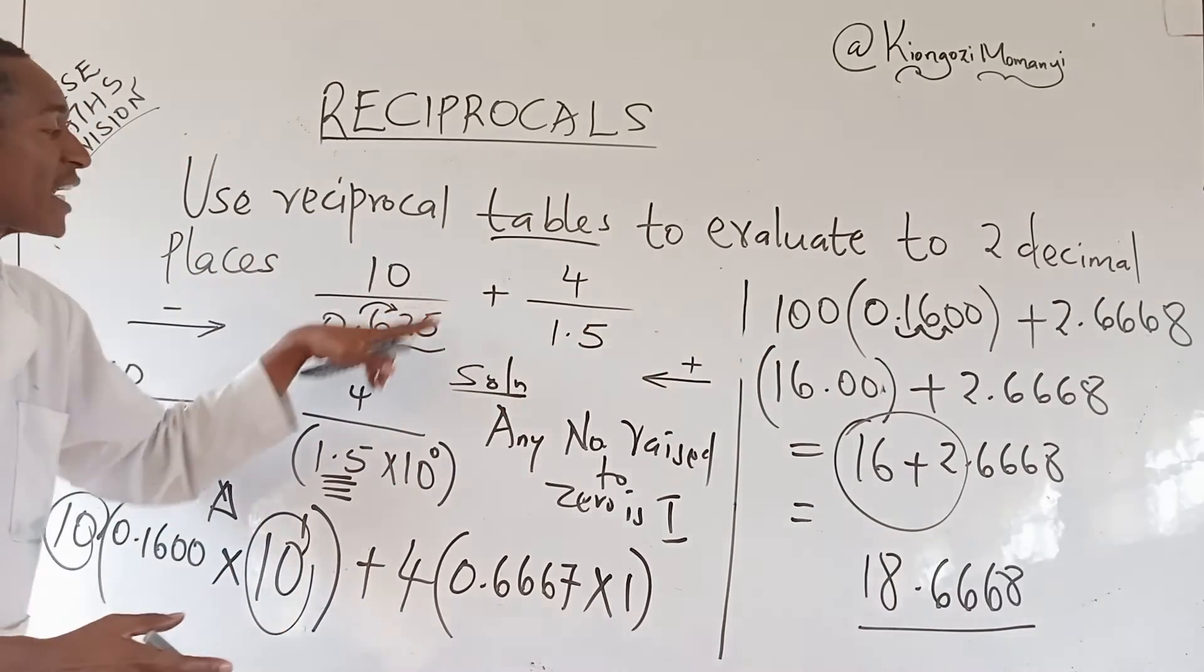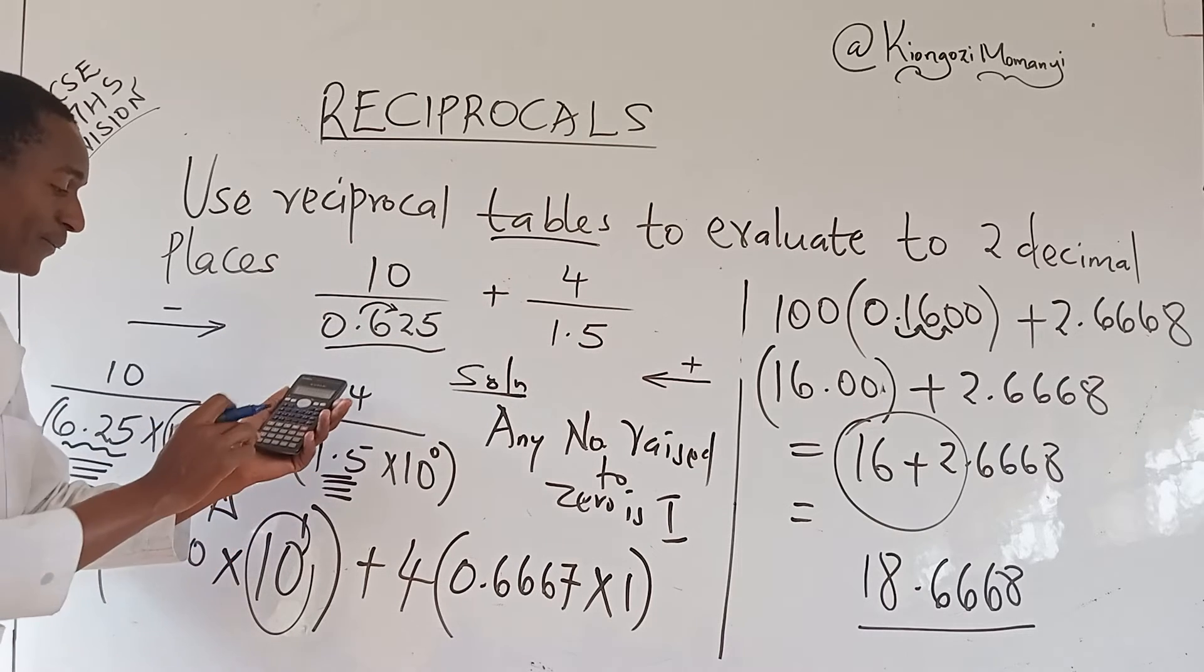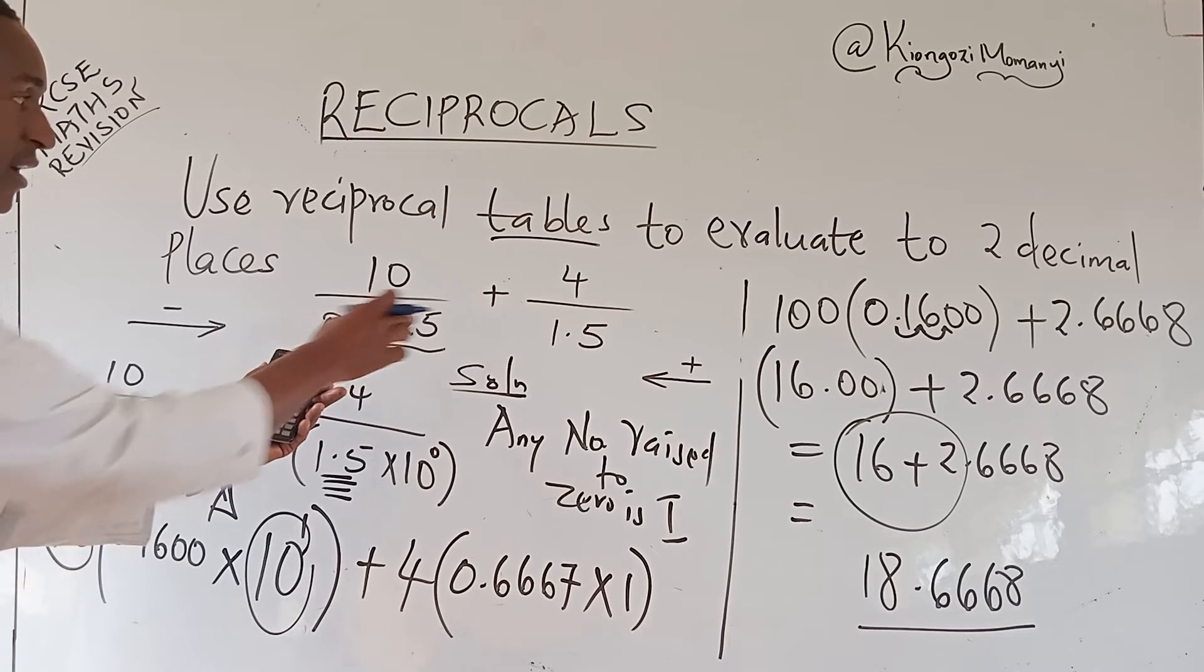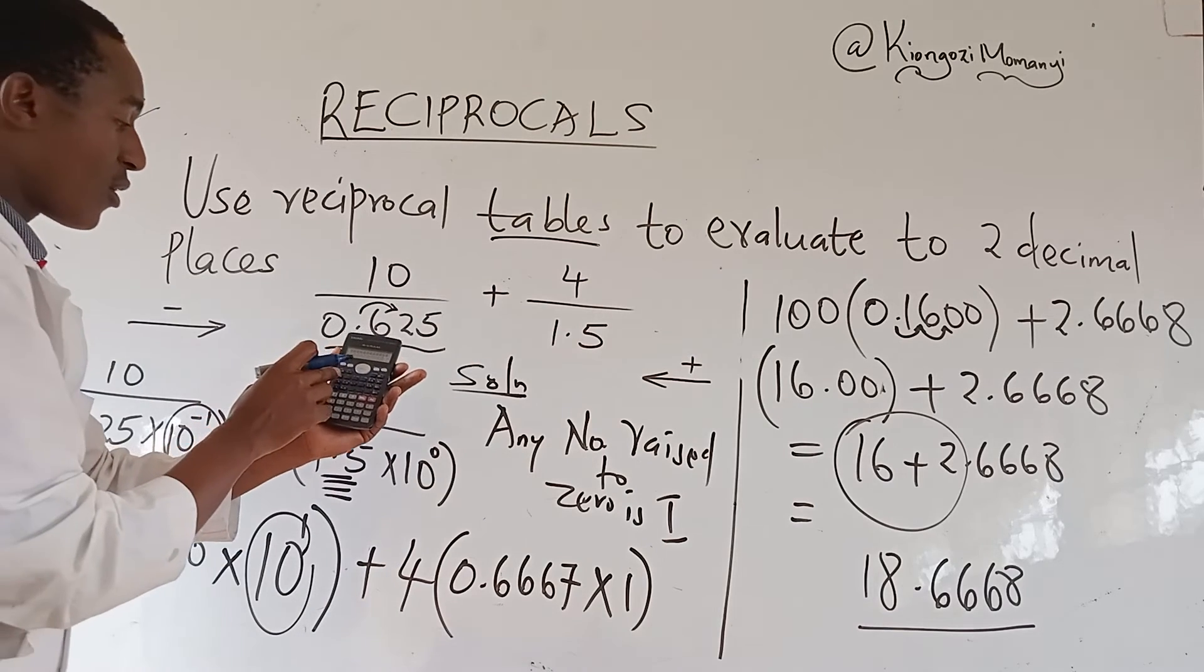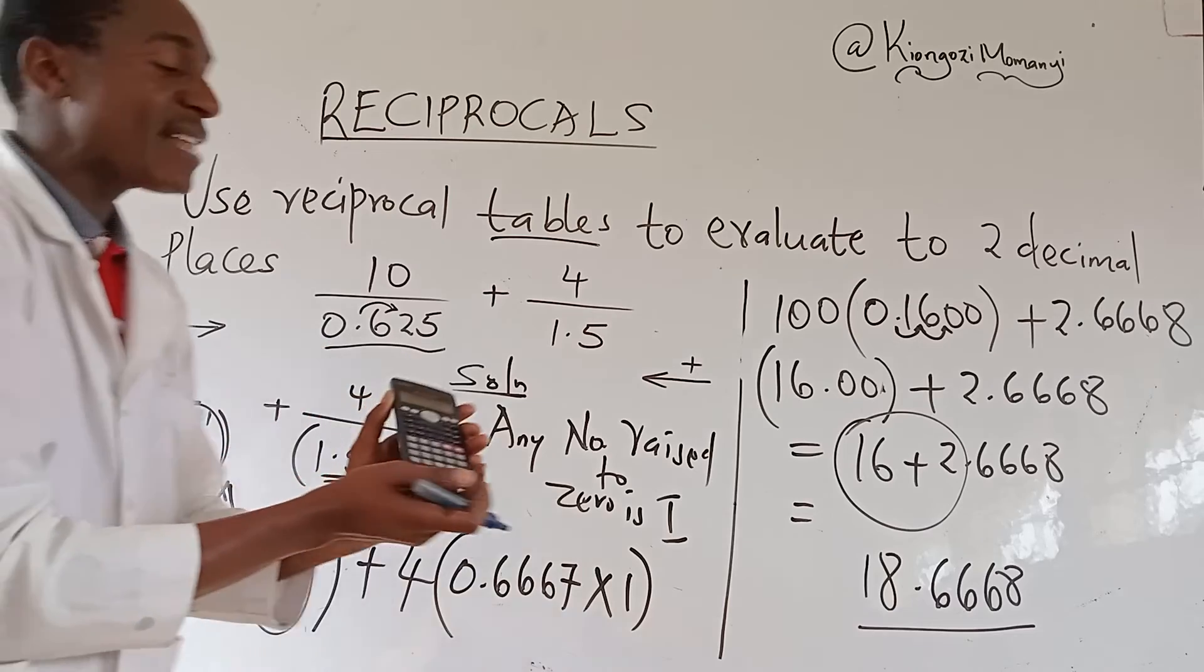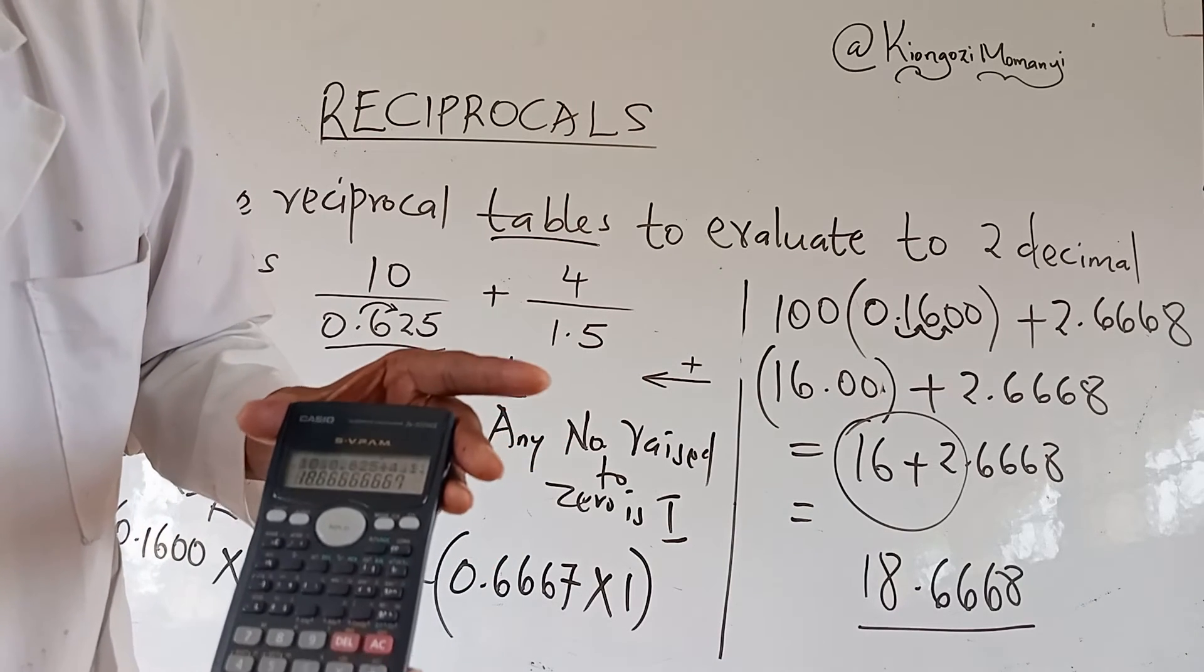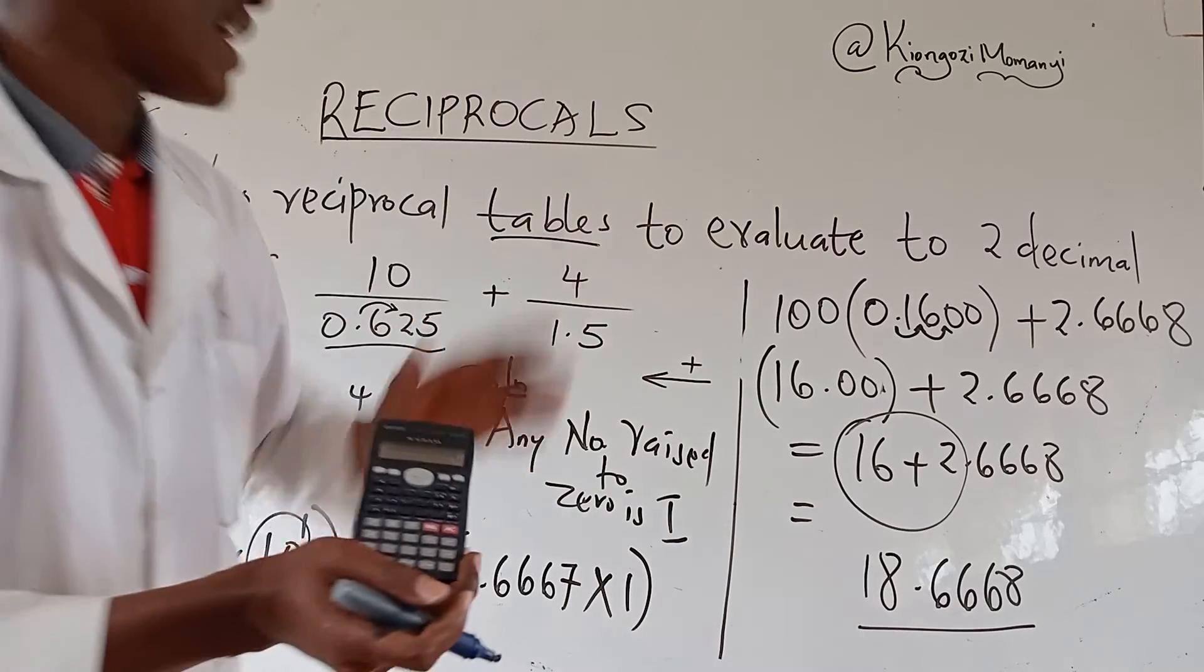you will use your calculator just to confirm whether you got it correct. You press 10 over 0.625 plus 4 over 1.5. The answer you get must be close to this value here. You are going to get 18.6668, sorry, 666 recurring. And then, remember there is a small difference.